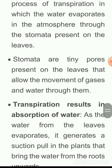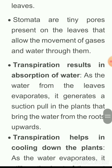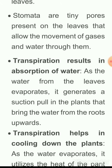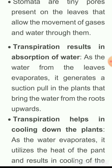In transpiration, water evaporates into the atmosphere through tiny pores on the leaves called stomata. These stomata allow the movement of gases and water through them. As water evaporates from the leaves, it generates a suction pull in the plant that draws water upward from the roots.